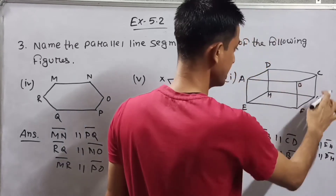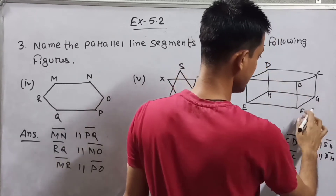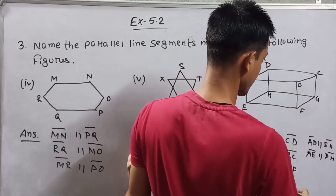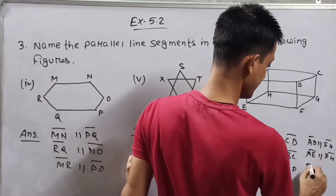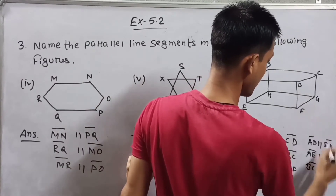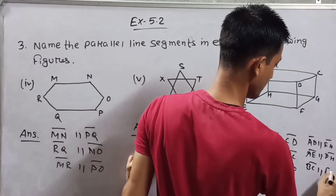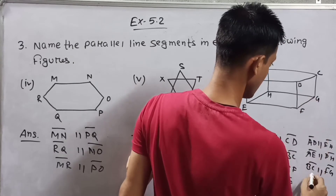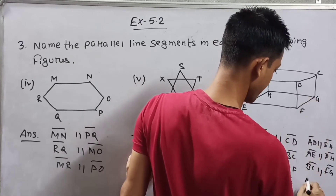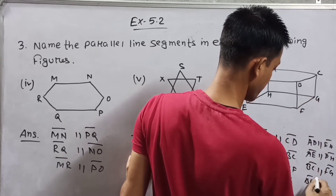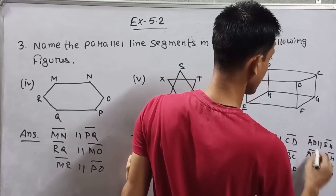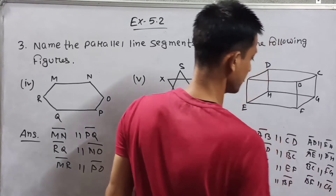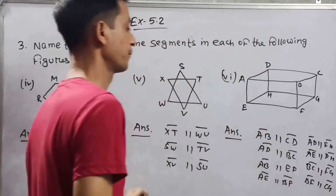Next, from face BCGF: BC is parallel to FG, and BF is parallel to CG.